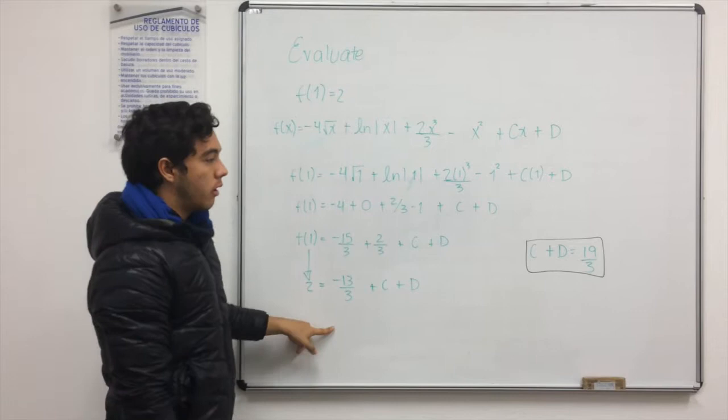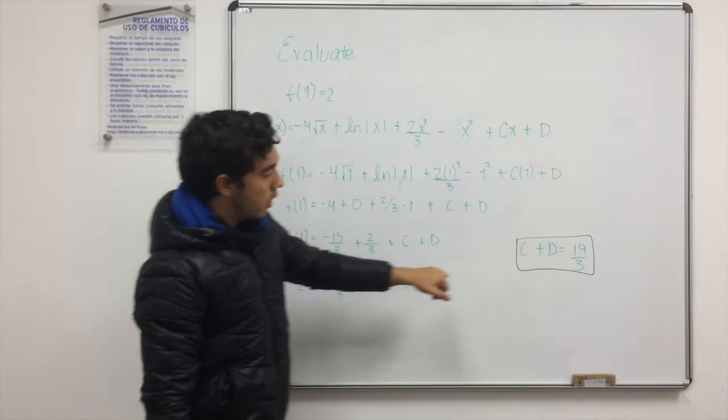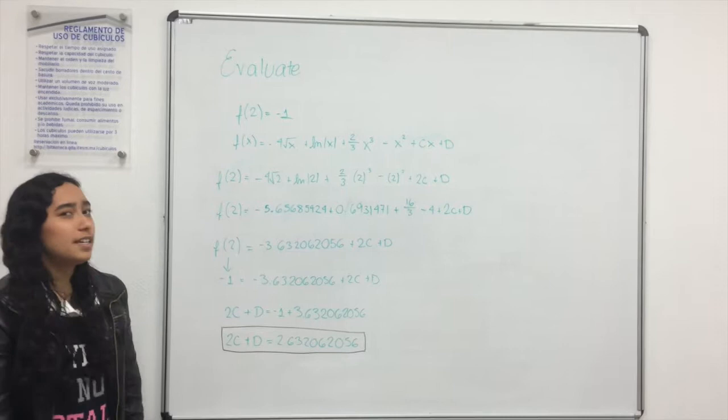And in order to get the values of c and d, we need to isolate them. So we pass the 13 thirds with the 2, and we get that c plus d equals 19 thirds.